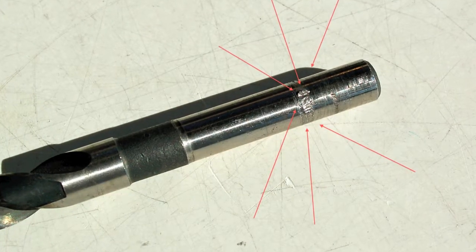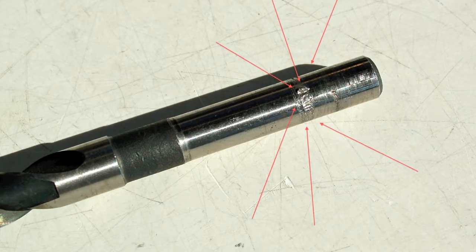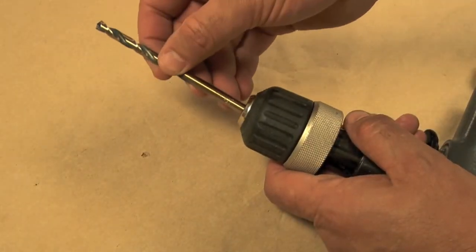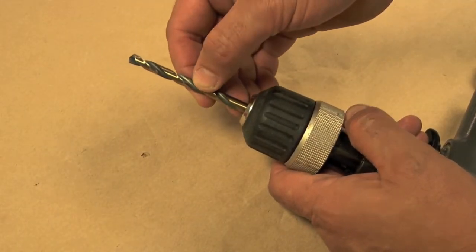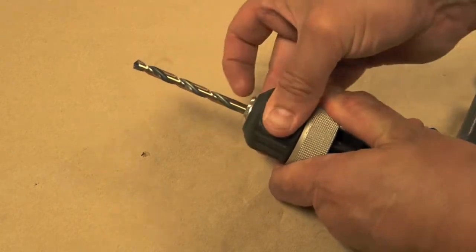Check for burrs on your drill bit shanks. Tighten the chuck on the drill shank, not the flutes. This will avoid wobbling of the drill bit.